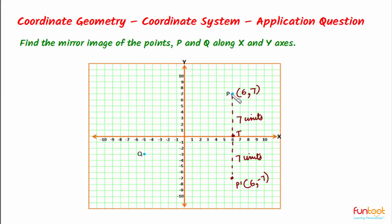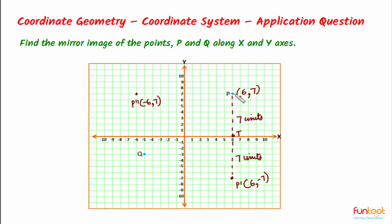Now we will find the image of point P along the Y axis. The Y coordinate remains the same, so it stays 7, and the X coordinate becomes the negative of itself, so it becomes −6. The coordinates of the image will be (−6, 7). This point, which we can represent as P″ with coordinates (−6, 7), is the mirror image of point P along the Y axis.